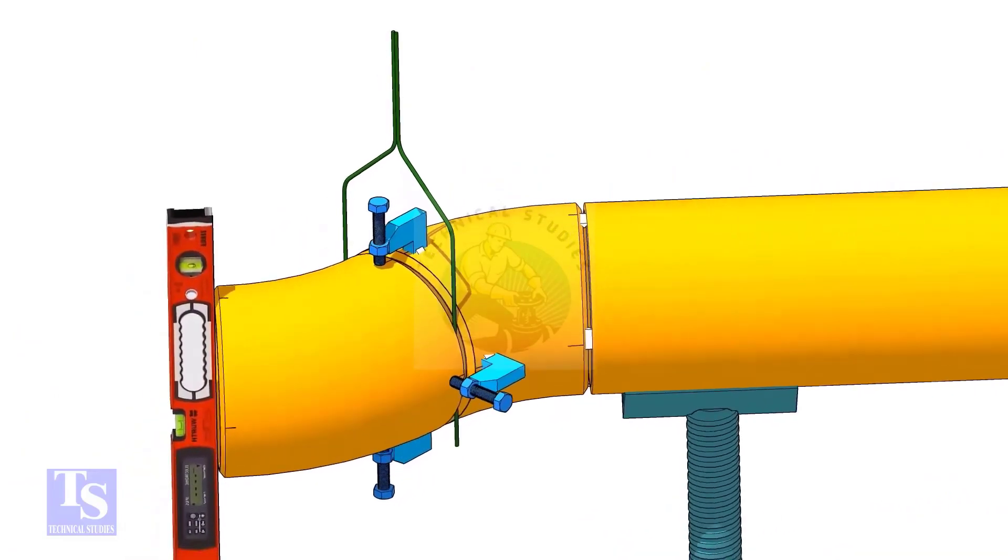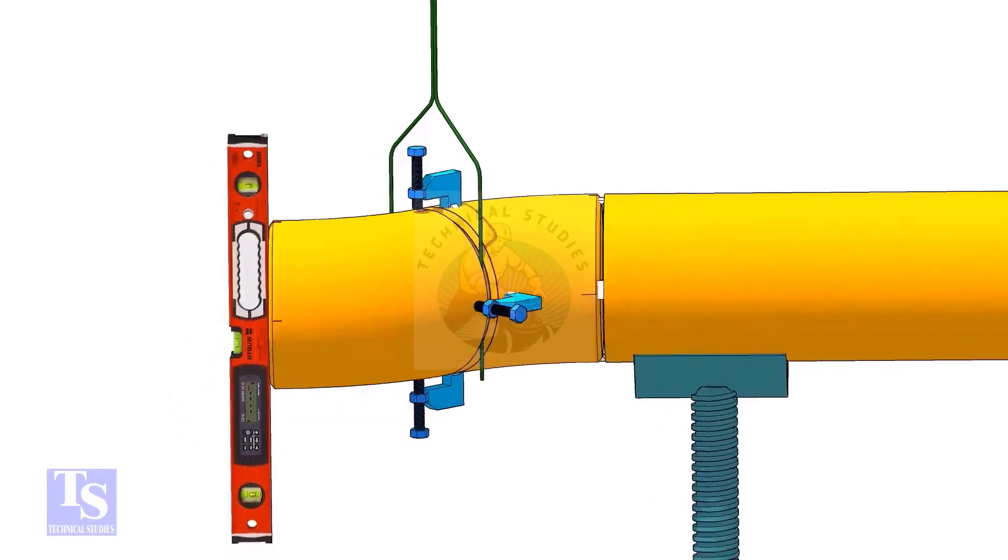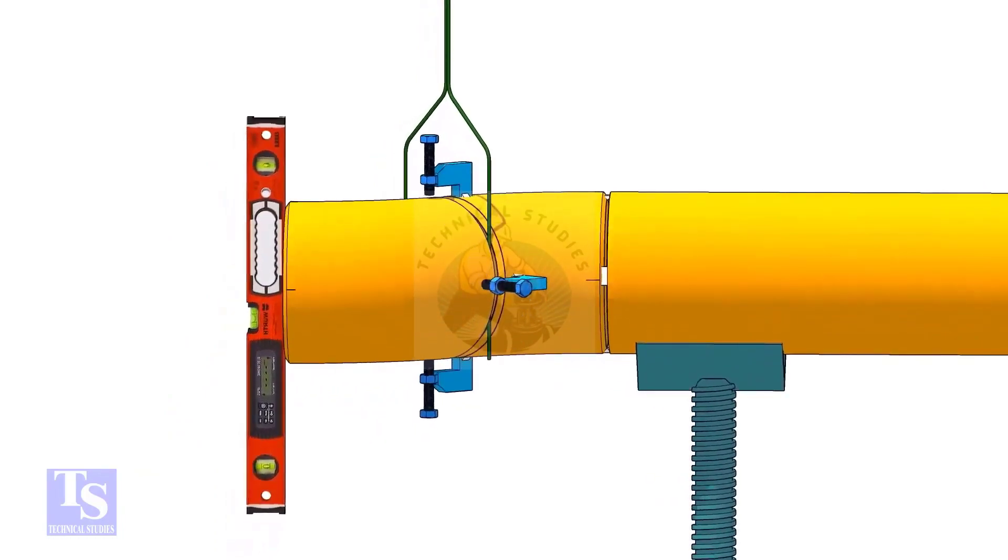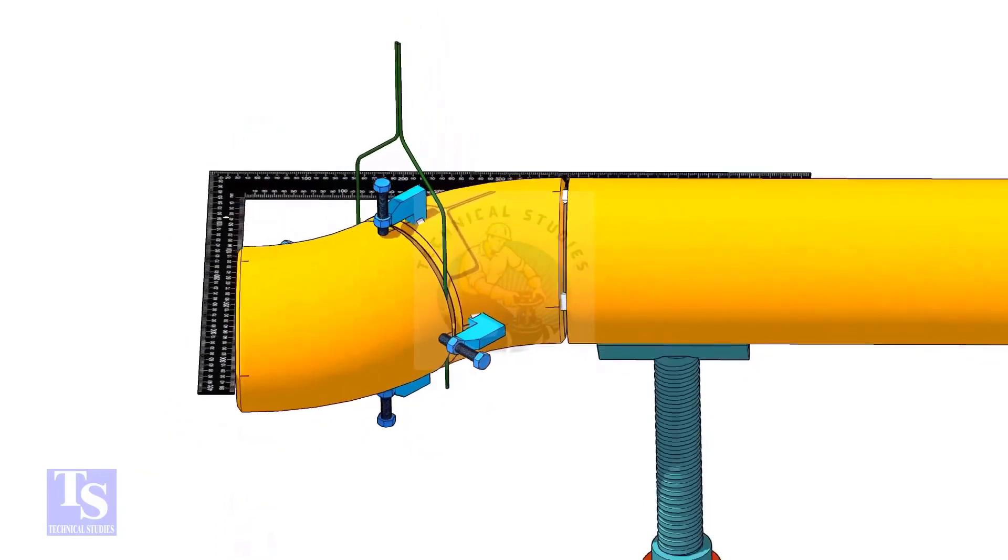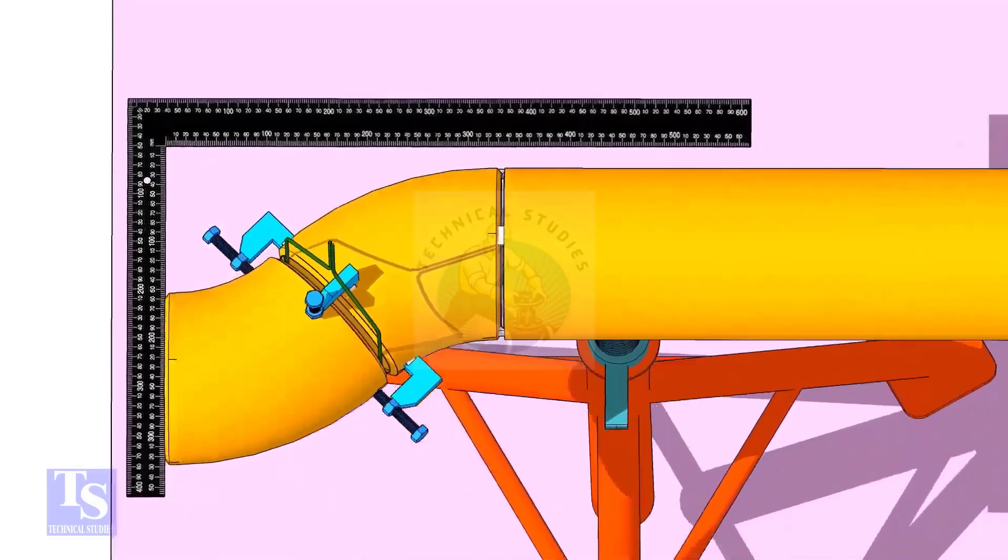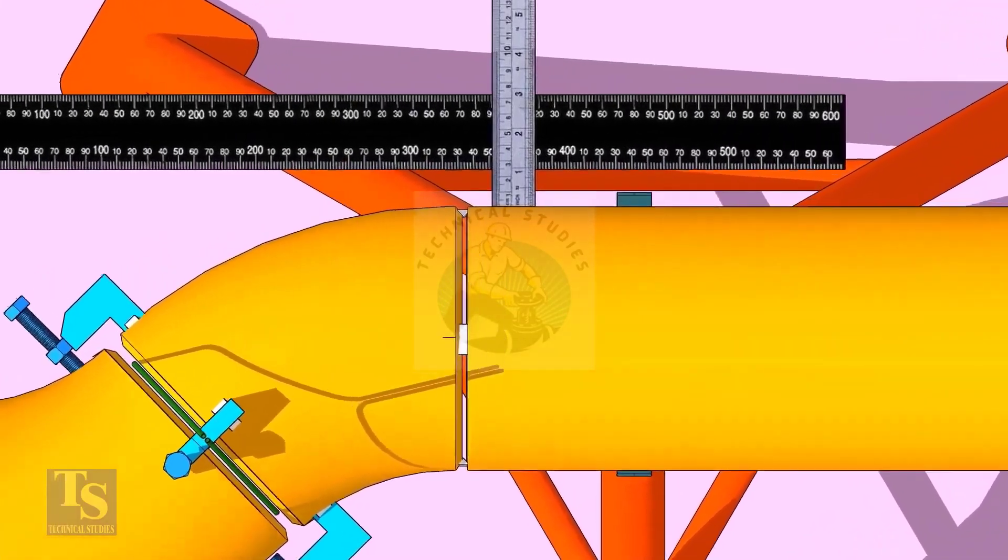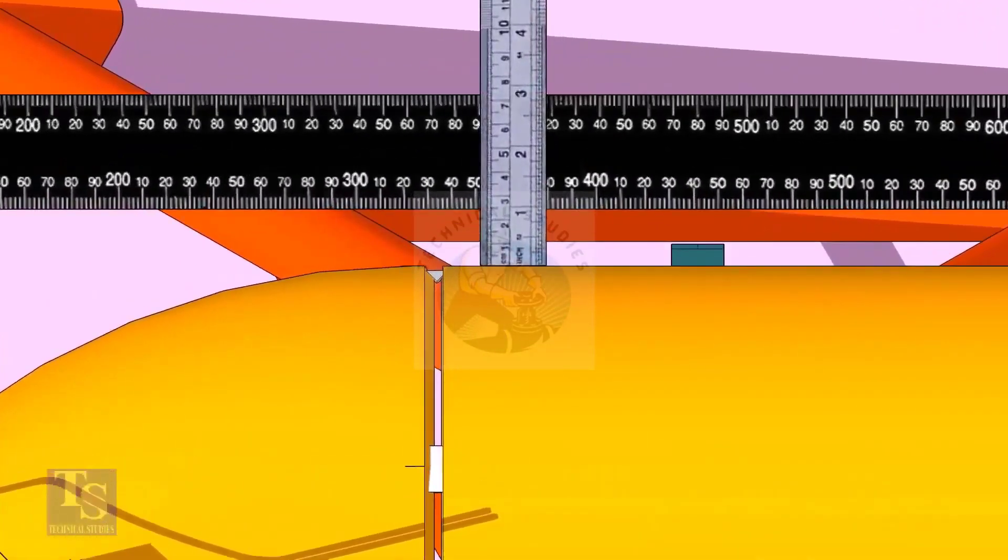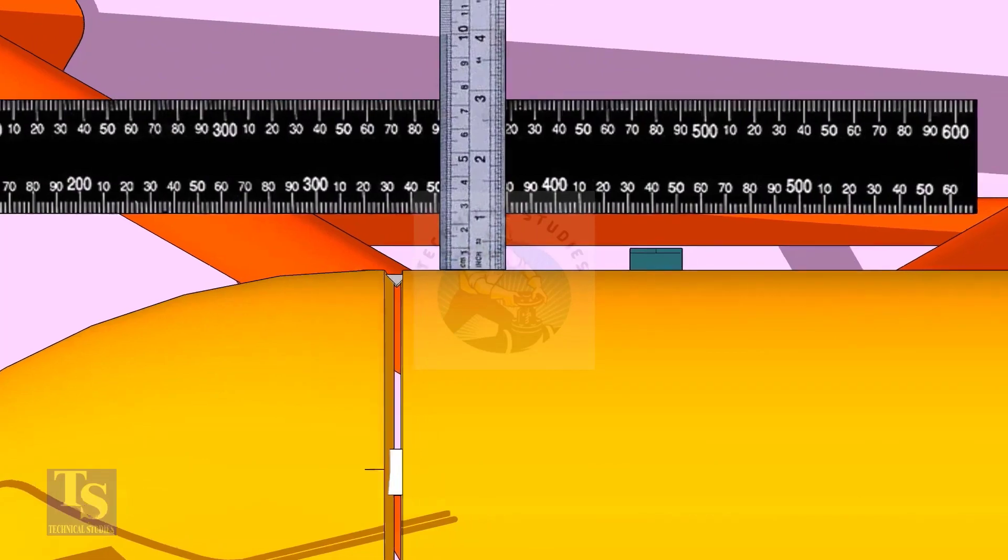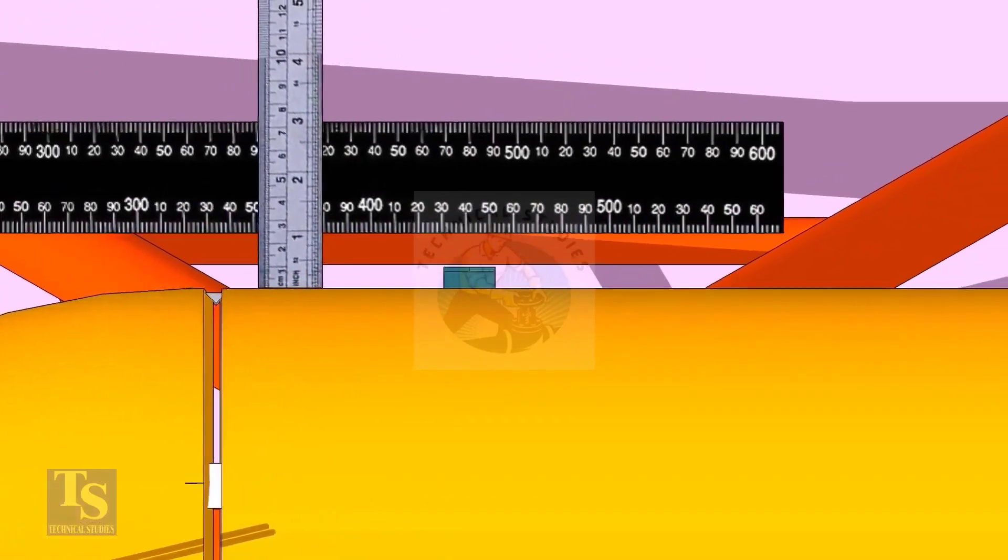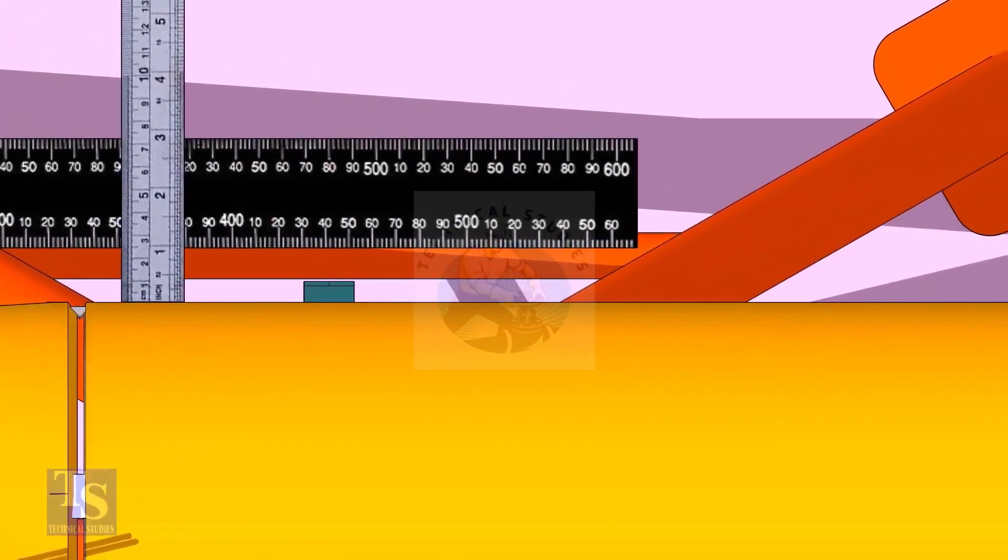Check if the face is level. Put a large right angle on the face of the elbow and check the distance between the pipe and the right angle. If both measurements are the same, tack weld on the top and bottom sides of the joint.